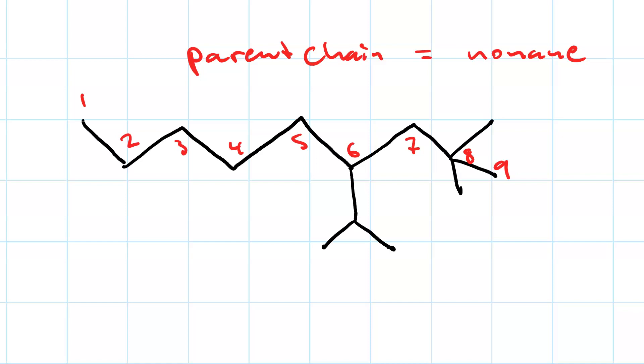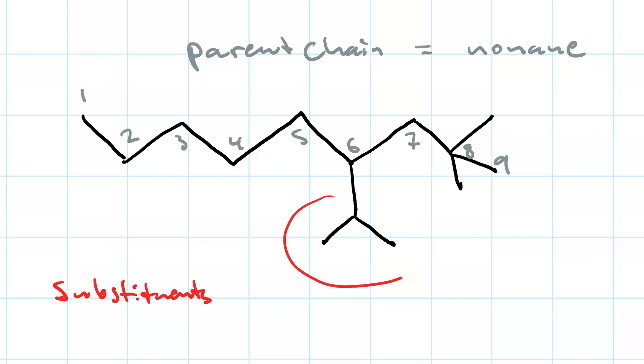The next thing we want to do is decide which direction to number it in because we want to get the lowest possible numbers for the substituents. Let's look at the substituents. So as far as substituents go, we have an isopropyl here and we have a methyl group and another methyl group. So when we name this, we're going to first name the substituents in alphabetical order. And each one is preceded by the number of the carbon it's on. Now, we always want to number this so as to have the substituents get the lowest possible numbers. The numbers are called locants. So if we number right to left in this case, we have one, two, three, four, five, six, seven, eight, nine, that's better.